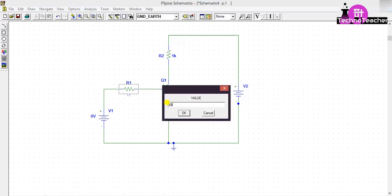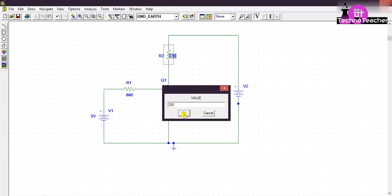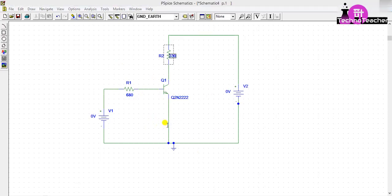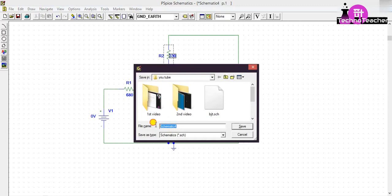Suppose this is 680. If we don't write anything here, then it will consider it as ohms. Since this value also, suppose this is 330, click OK. Then we have to save this schematic. For that press Ctrl+S, then give a name, suppose input characteristics, then save it.